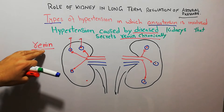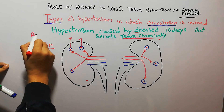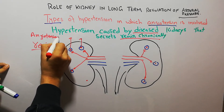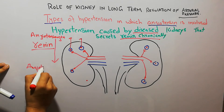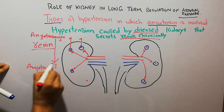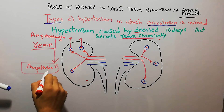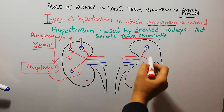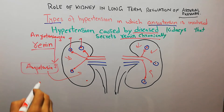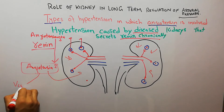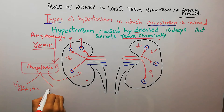This renin will continuously convert angiotensinogen into angiotensin. The angiotensin formed will act on the normal parts of both kidneys. We know that angiotensin has two main systemic roles: it causes vasoconstriction, and in the kidneys it leads to fluid retention.